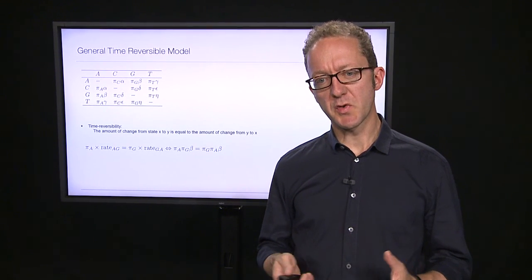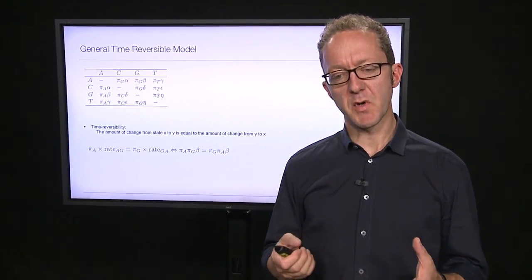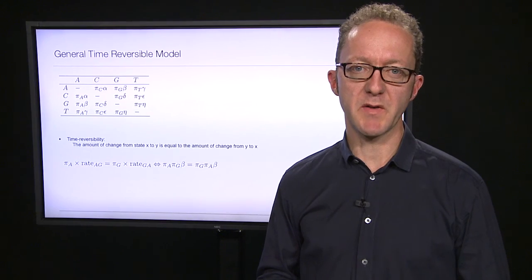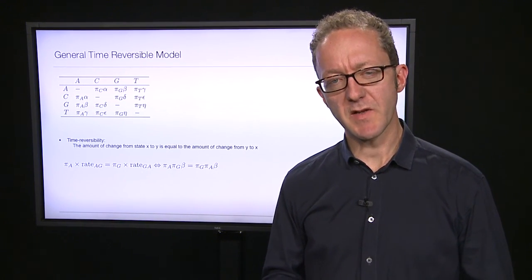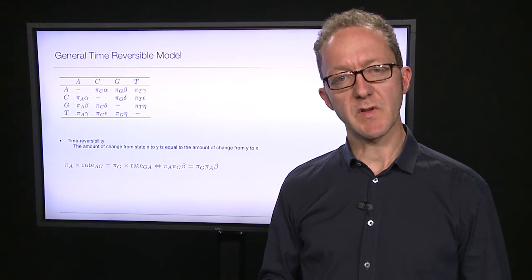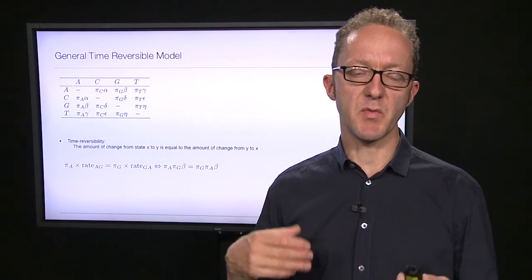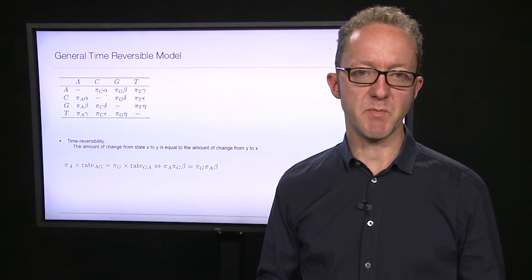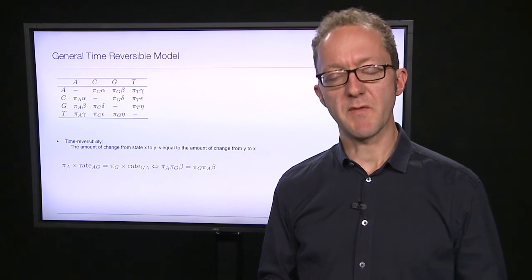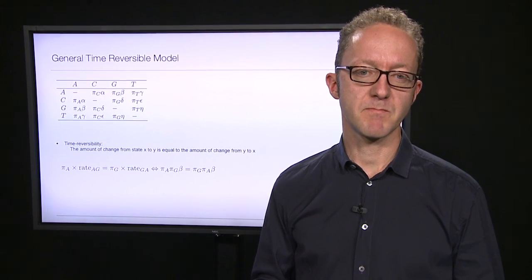At this point I'd suggest you go and do first the manual exercise on models of substitution, and then the computer exercise, as they will nicely complement these lectures. In the manual exercise you will do a manual simulation of evolution using a six-sided die, exploring the relationship between expected and observed amount of change by simulating evolution in a short piece of DNA. In the computer exercise you will use GnuPlot to explore models of how sequences change.